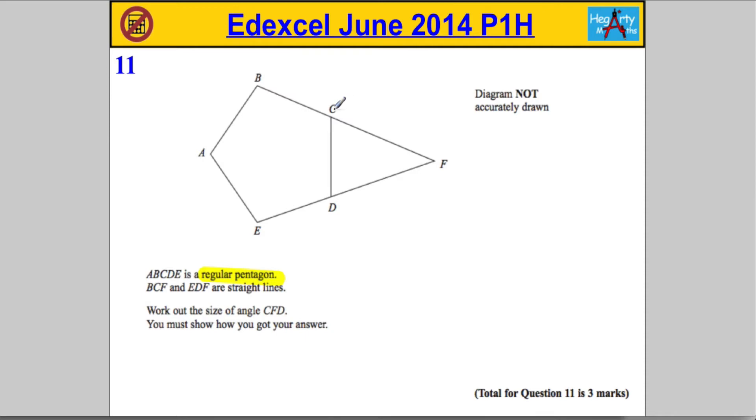Let's mark that angle. CFD is what we're asked to work out here. We need to show how we got our answer. Let's return to this piece of information. We're told that it's a regular pentagon. That means all the sides are the same, and therefore all the angles are the same. I would really like to know the size of each of these angles.